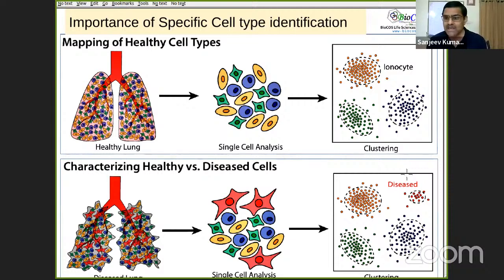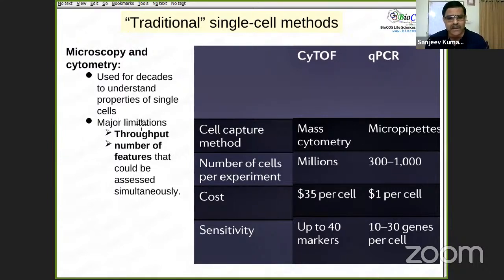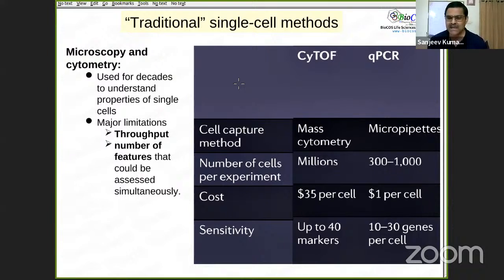Traditional single cell methods included microscopy and cytometry, which still exist today. The challenges were throughput, number of features analyzable, and cost — at $35 per cell or even $1 per cell, scaling to genome-wide analysis across millions and trillions of cells becomes very expensive. The aim is to scale to millions of cells affordably.